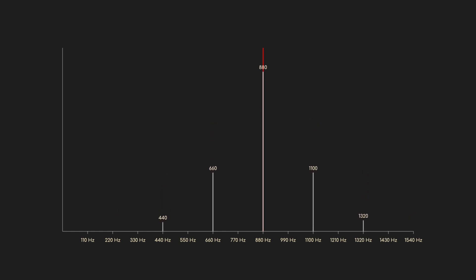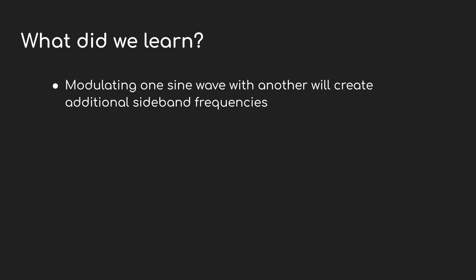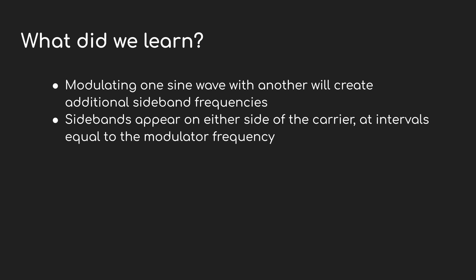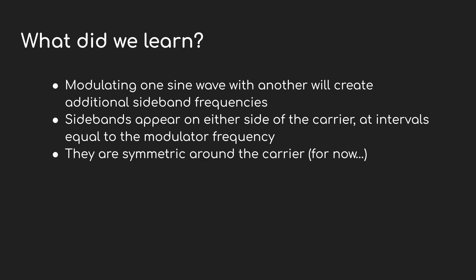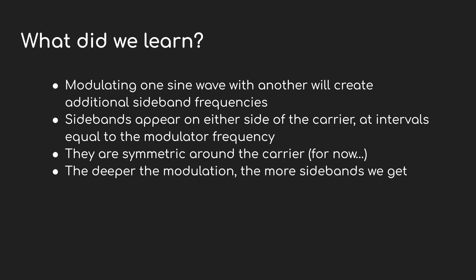Okay, that was a lot — it's probably worth stopping here and thinking about what we just saw and heard. By modulating one sine wave with another we get a set of side bands — extra frequencies added to the carrier. Those side bands appear on either side of the carrier at intervals equal to the modulating frequency, they're more or less symmetric around the carrier, and the number of side bands depends on how deep the modulation was.